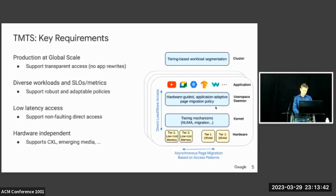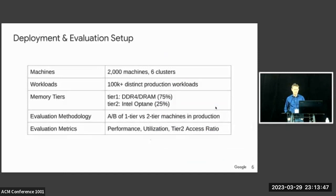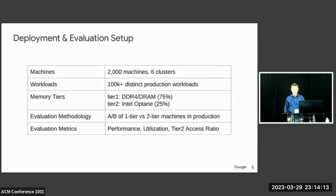We evaluated TMTS for two years across 2,000 machines and six clusters at Google, serving over 100,000 different workloads. Our memory tiers were 25% Intel Optane and 75% DRAM, deploying the same total amount of memory as an ordinary machine. We used an A-B setup comparing one-tier and two-tier machines in production, evaluating whether we could maintain the same performance and utilization. We also looked at tier-two access ratio — the fraction of memory accesses going to the second tier — as a proxy for performance.